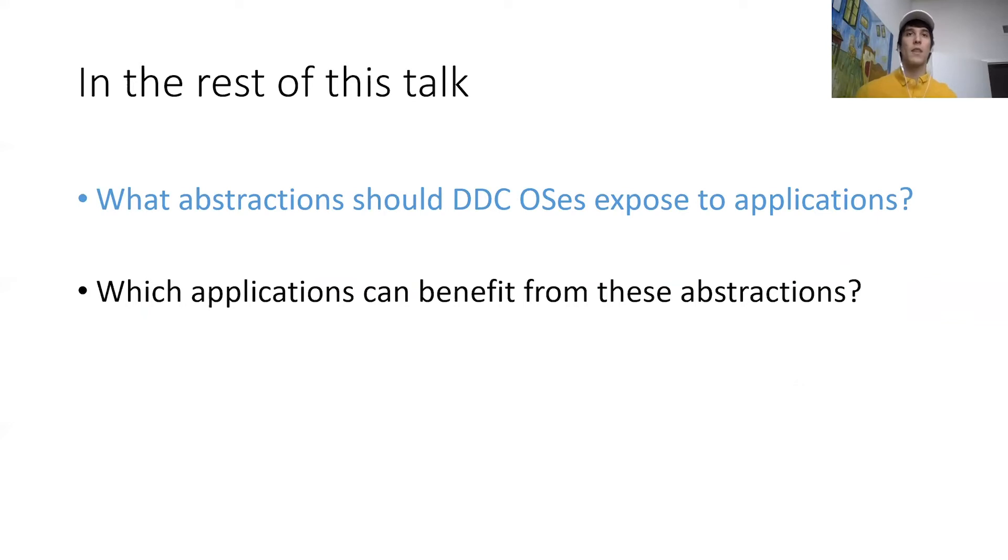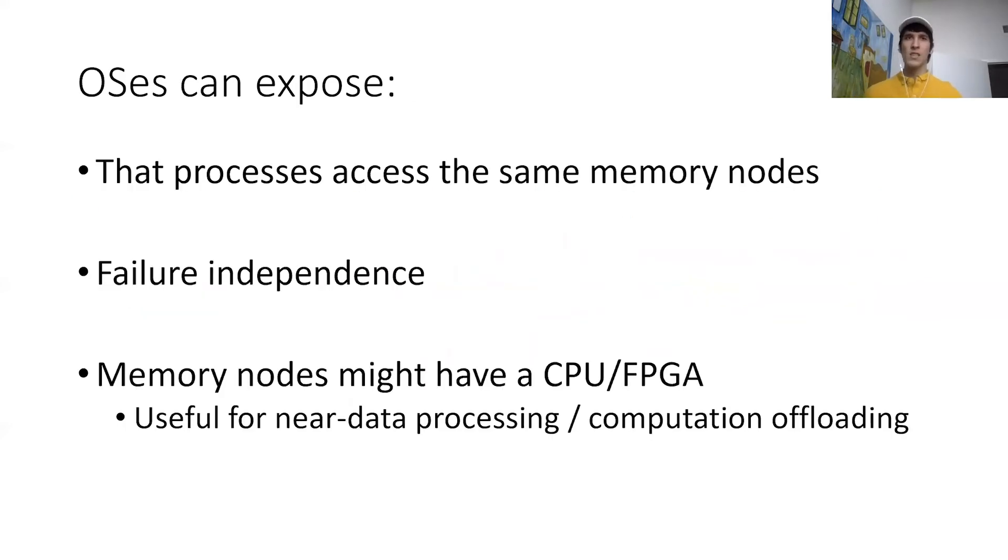So let me start with what information OSs can expose to applications. First, OSs could expose which servers are accessing the same memory nodes. Second, OSs could expose to applications when a memory node has crashed or is unreachable, and this can be useful for applications that implement their own fault-tolerant protocols. And finally, since memory nodes run independently on their own blade, they may have a CPU or maybe an FPGA which we could use for offloading computation so that it runs closer to the data. In this talk, however, I'm going to focus on the first two mostly because I feel that the third aspect—this computation offloading—is pretty well studied in many other contexts.